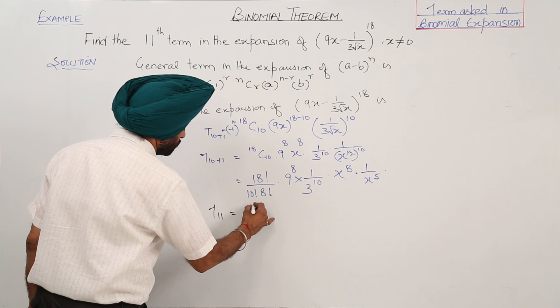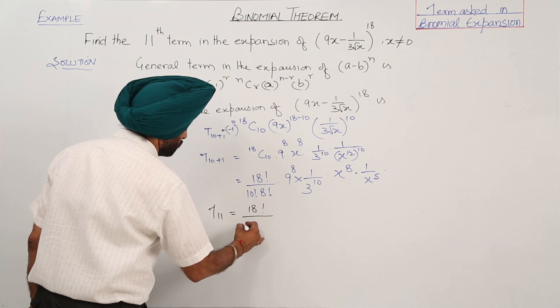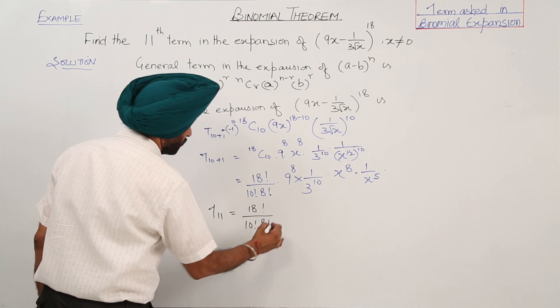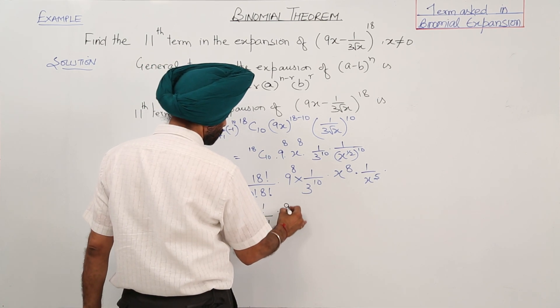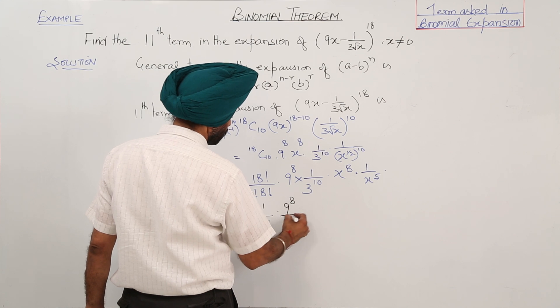T_11 is equal to 18 factorial upon 10 factorial 8 factorial times 9 raised to power 8 upon 3 raised to power 10 times x raised to power 3.